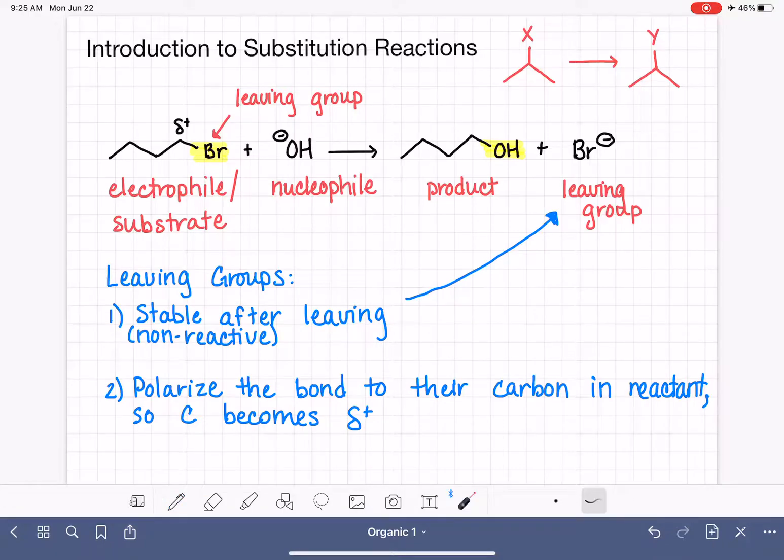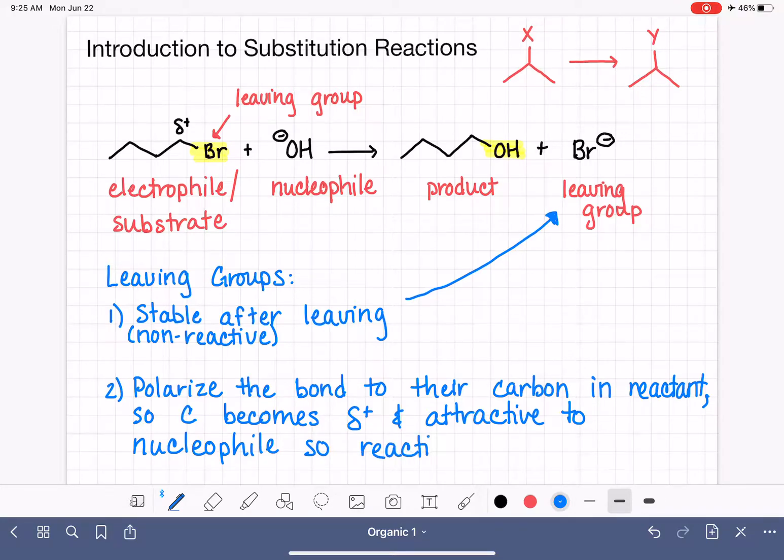So we want to polarize the bond to the carbon in the reactant so that the carbon becomes partially positive and attractive to the nucleophile so that a reaction can occur. If this carbon atom does not become electrophilic, if it doesn't get partially positive due to the polarity of this bond, then the nucleophile will not be interested in attacking or reacting with that electrophilic carbon and nothing will happen at all. So again, our leaving group needs to be something that can be stable once it falls off the molecule but also electronegative enough that it creates a partial positive carbon so that a reaction can actually occur.